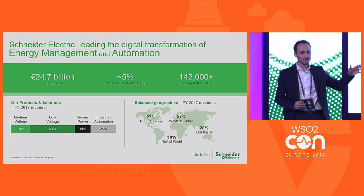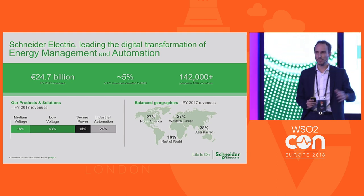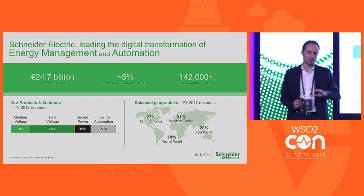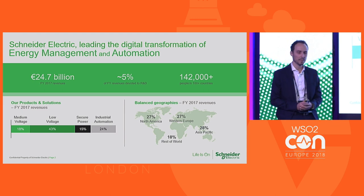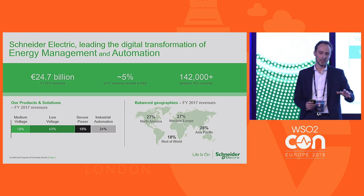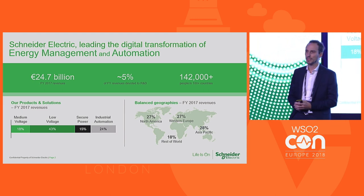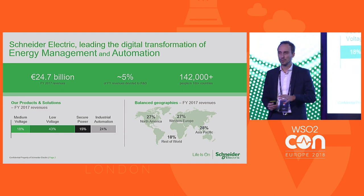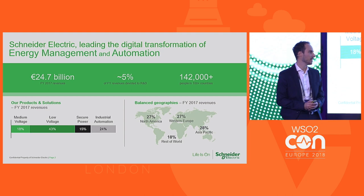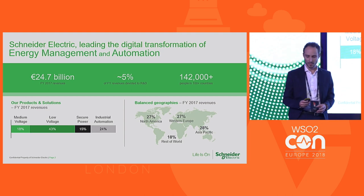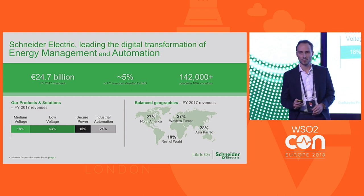Our businesses are well-balanced across geography: around 27% in North America, about the same in Western Europe, 28% in Asia-Pacific, and 18% for the rest of the world.